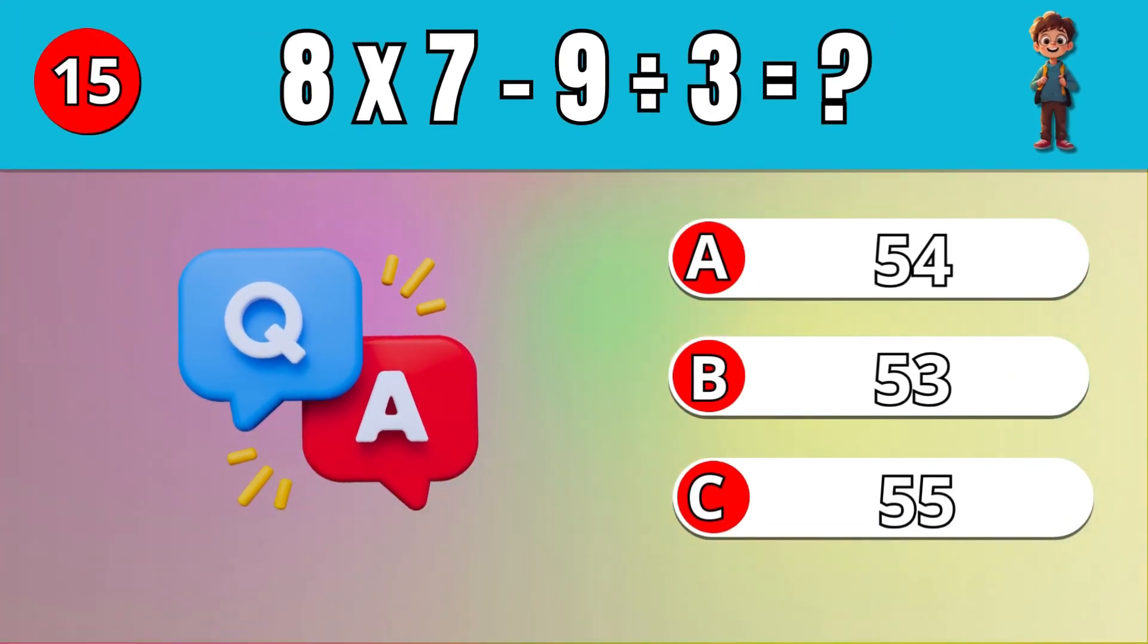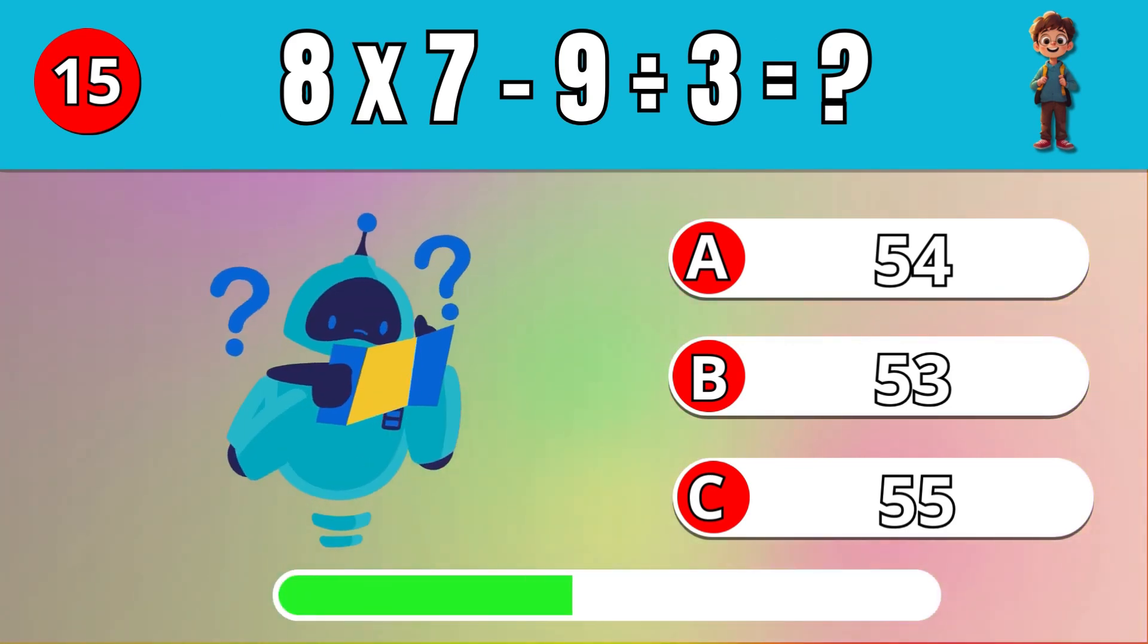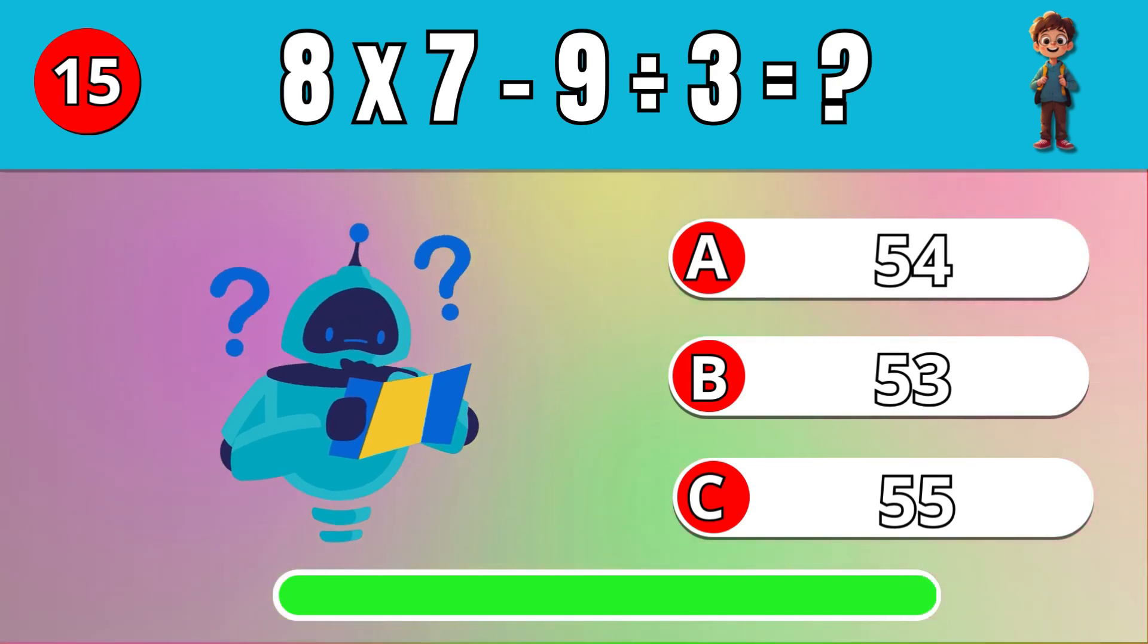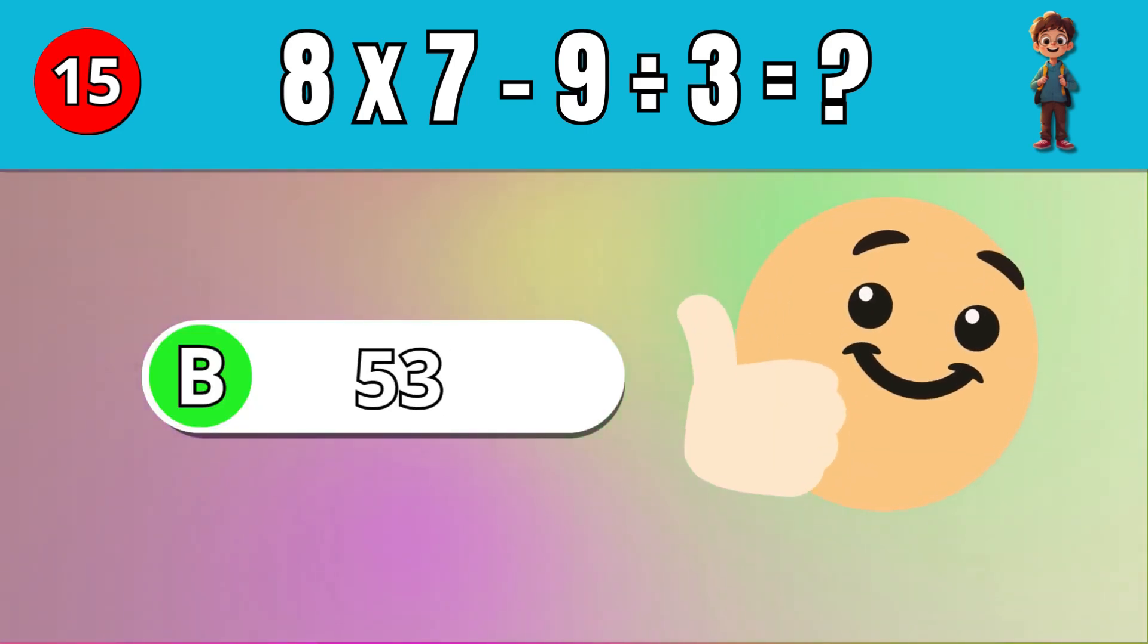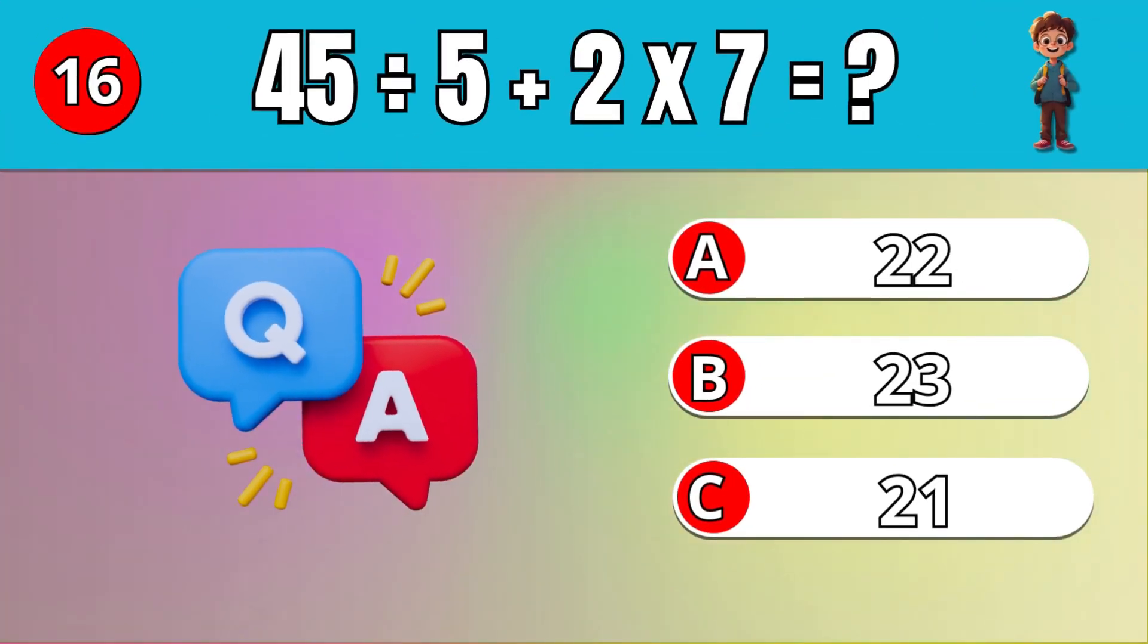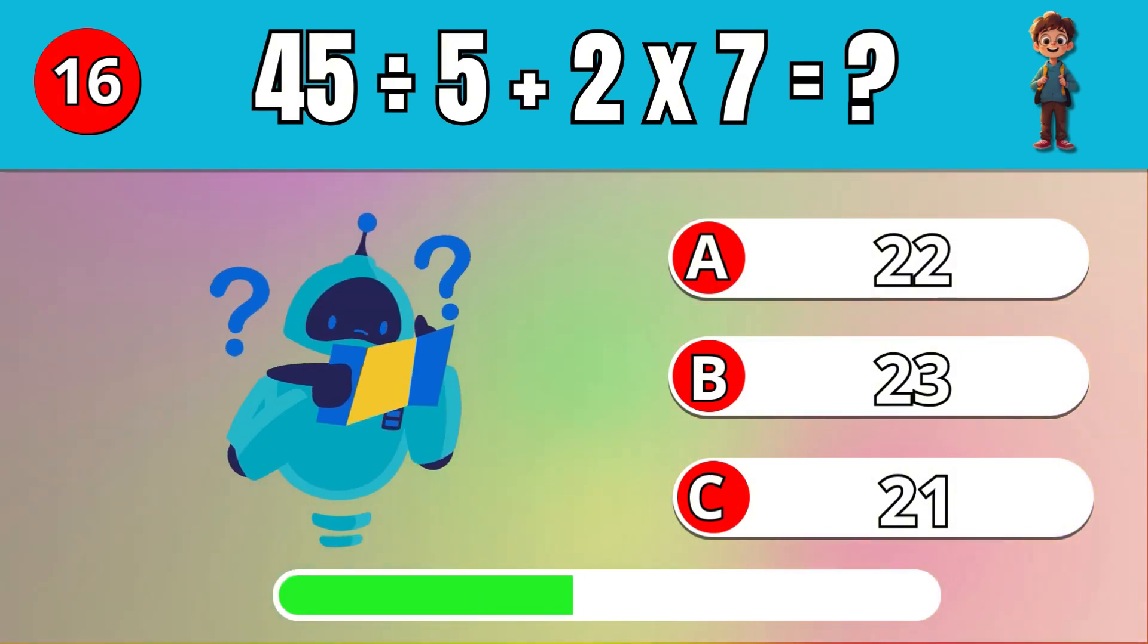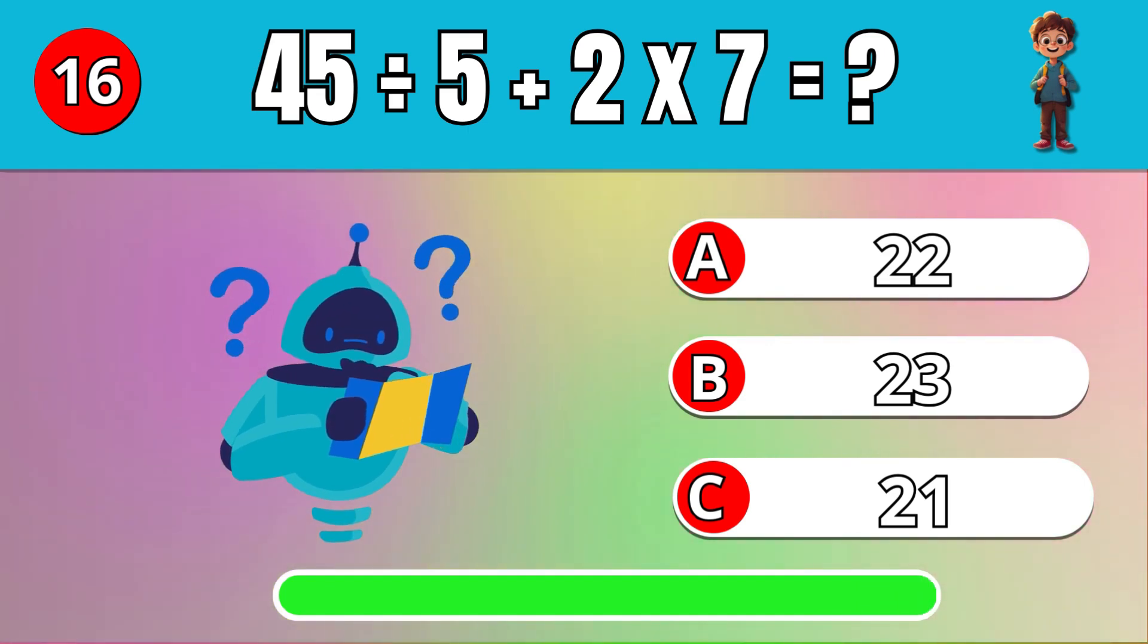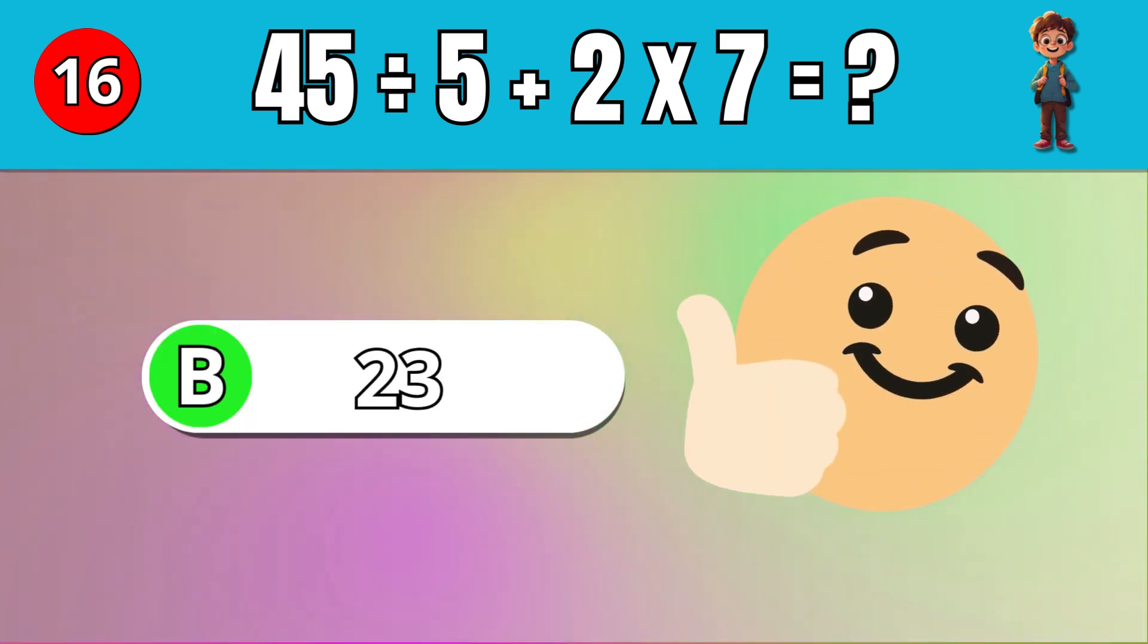What is 8 times 7 minus 9 divided by 3? C, 53. What is 45 divided by 5 plus 2 times 7? C, 35.